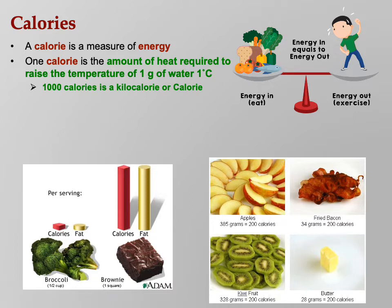1,000 calories is a kilocalorie, or capital-C Calorie. On food labels, the calories you see are actually kilocalories. So when it says that a soda like a Coke or a Pepsi has 100 calories, that's actually 100,000 calories — enough to raise 100,000 grams of water one degree Celsius.